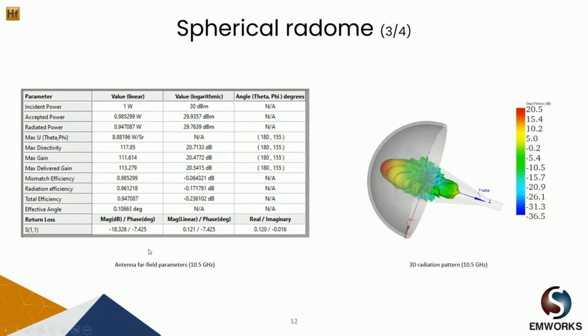In HFWorks, we have what we call the antenna far-field parameters. Under this table we can see different antenna parameters such as gain, directivity, mismatch efficiency, radiation efficiency, total efficiency, along with other parameters.